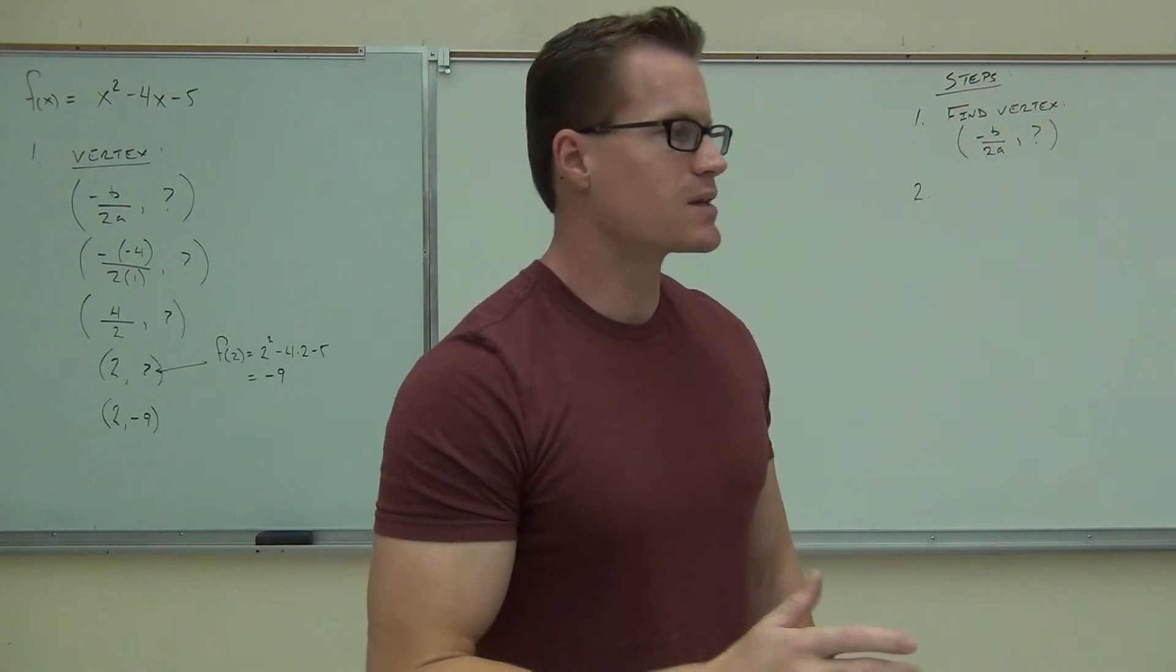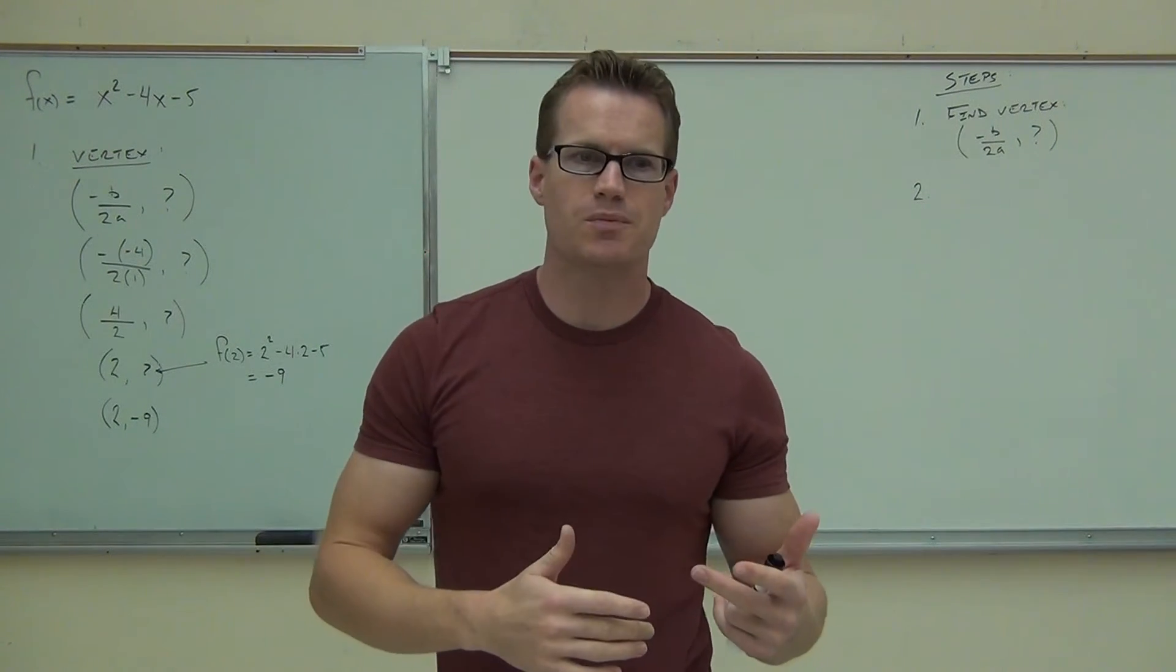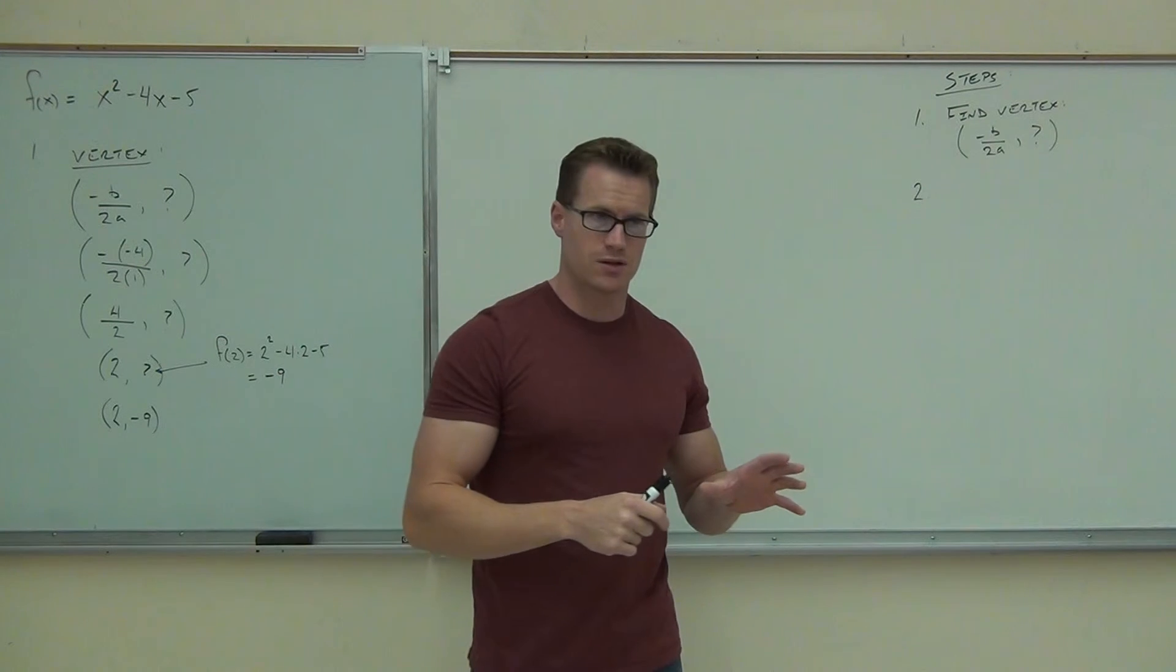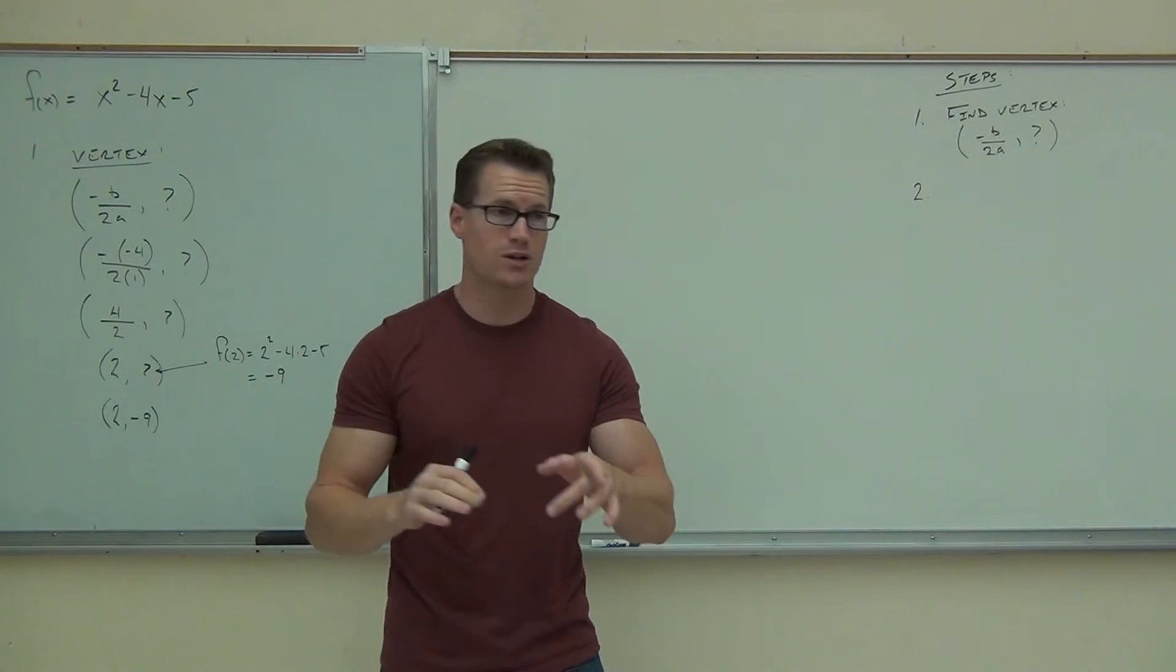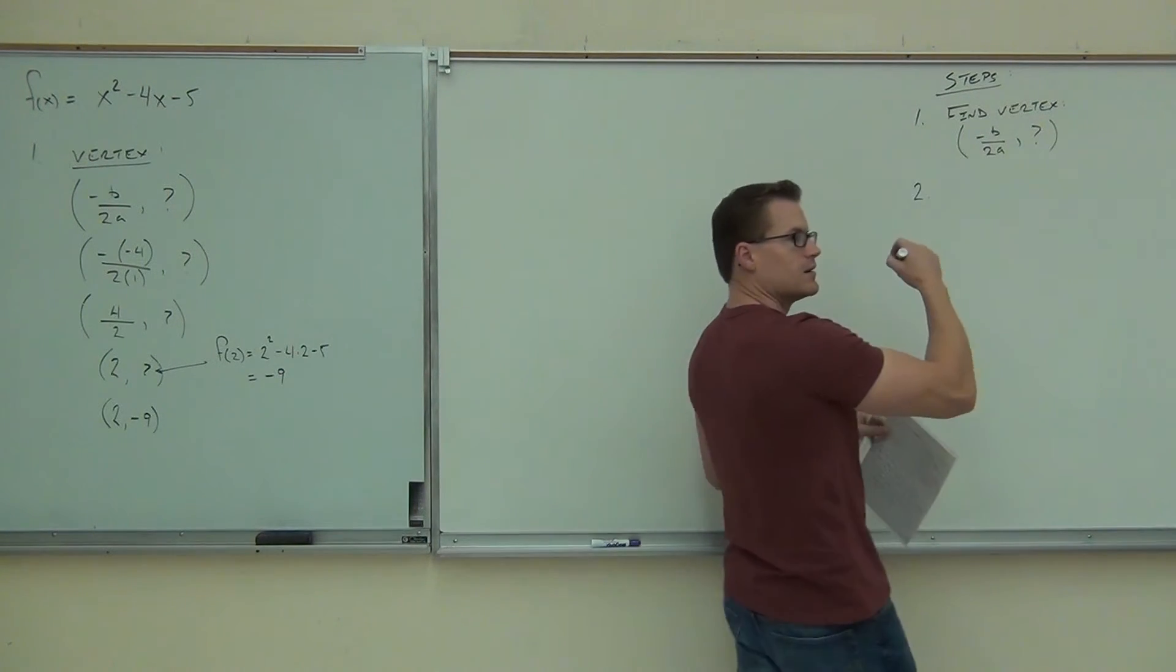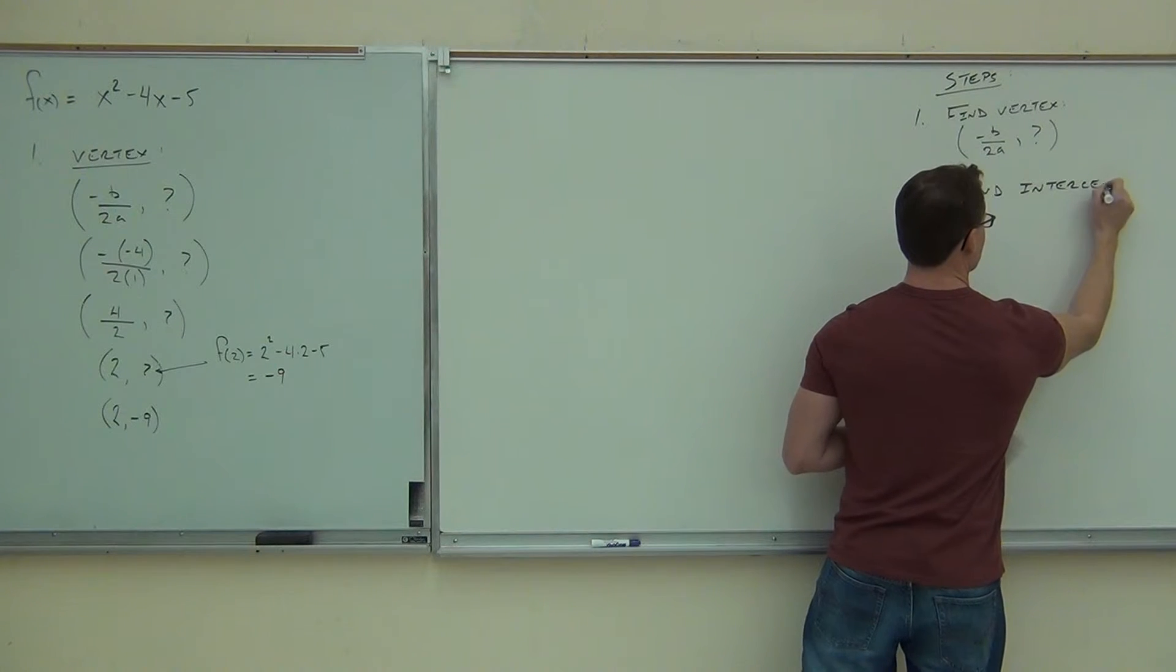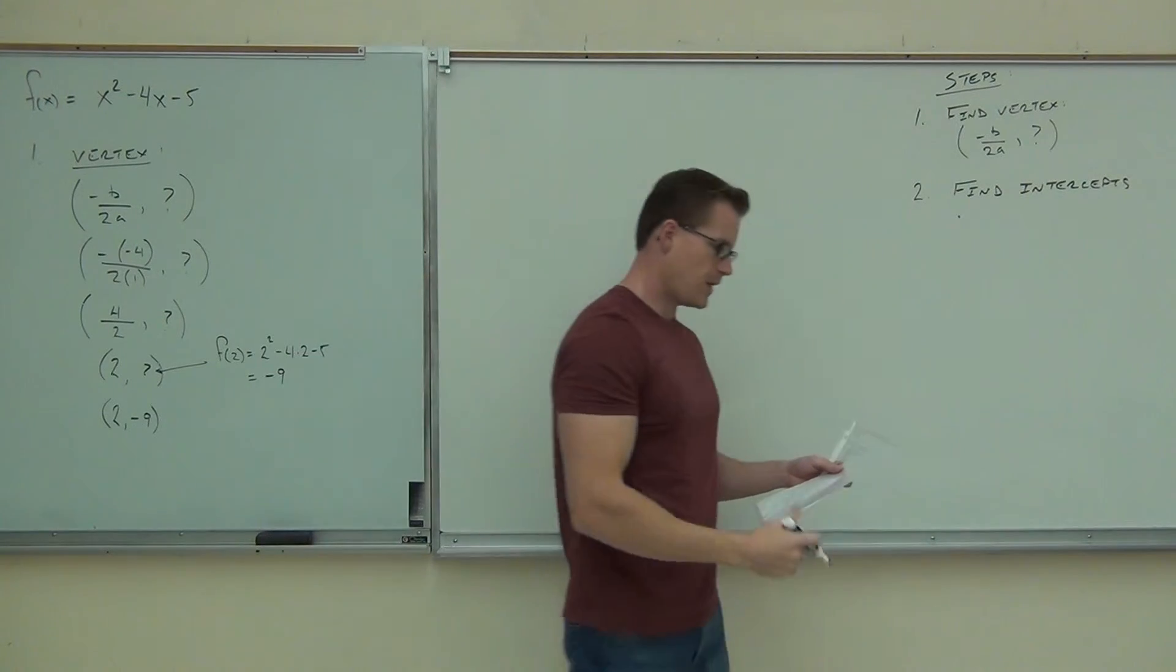Now, we do have a couple more steps. You see, in order to be really, really accurate with these things, we need to find what's called our intercepts. Our intercepts are where we're going to cross the y-axis and the x-axis. So there's two sets of intercepts we need to find. The y-intercept, that's the easy one, and the x-intercept, which takes just a little bit more work, but hey, you know how to do it already. So step number two, which we're going to do up here, is find the intercepts.